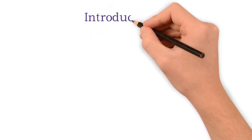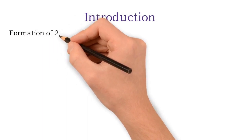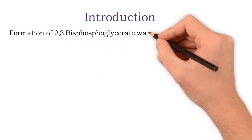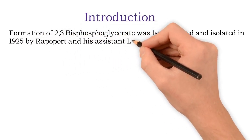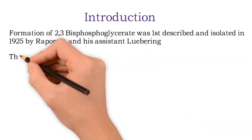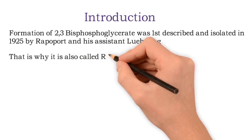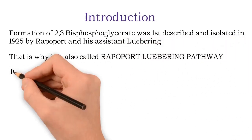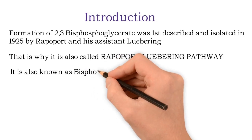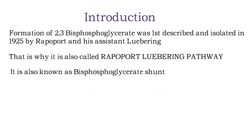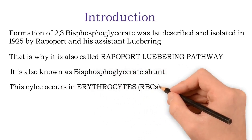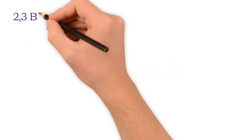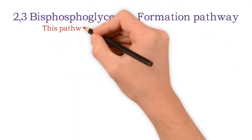Formation of 2,3-bisphosphoglycerate was first described and isolated in 1925 by Rapoport and his assistant Luebring. That is why it is also called the Rapoport-Luebring pathway. It is also known as the bisphosphoglycerate shunt, and this cycle occurs in erythrocytes — that is, red blood cells.